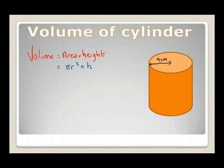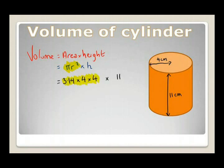First, let's work on a cylinder with a radius of 4 cm and a height of 11 cm. I'll shade in the circle part. πr² = 3.14 × 4 × 4 = 50.27; the height is times 11. So volume = 50.27 × 11 = 552.92 cm³.